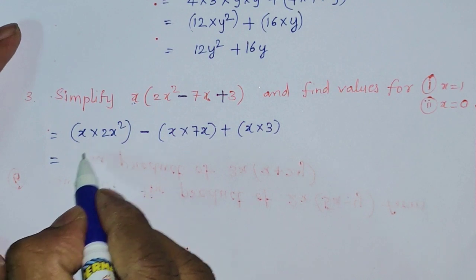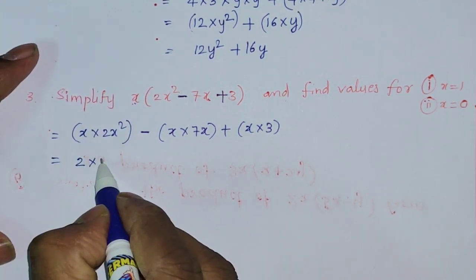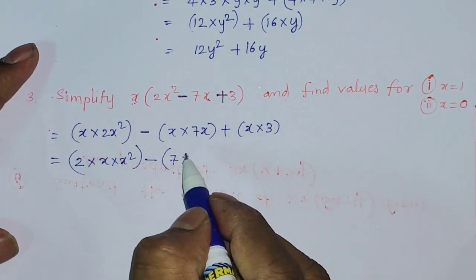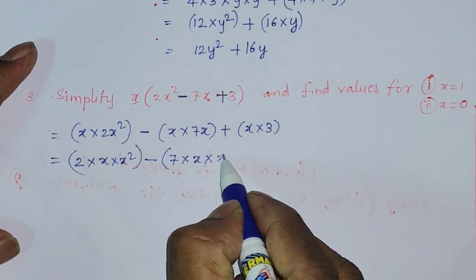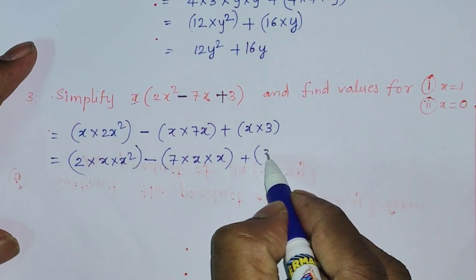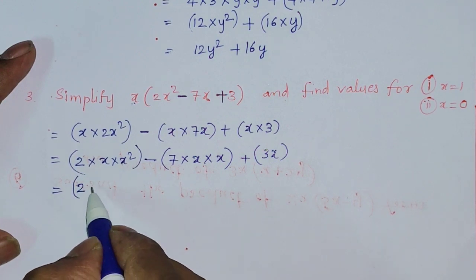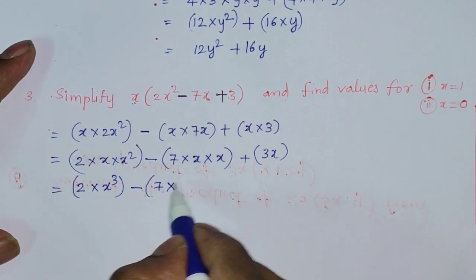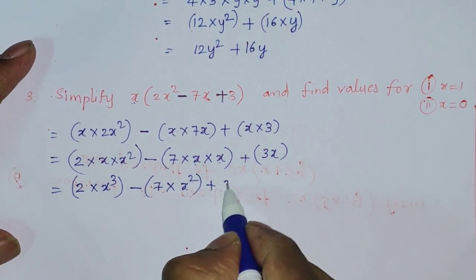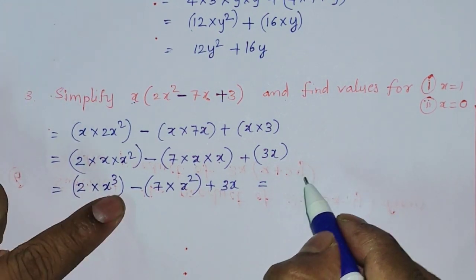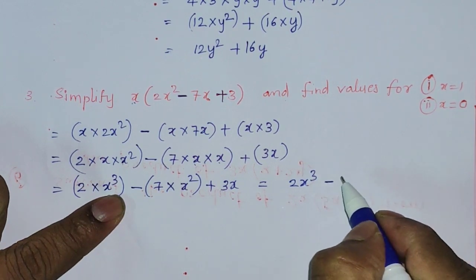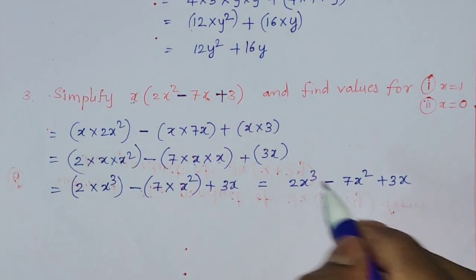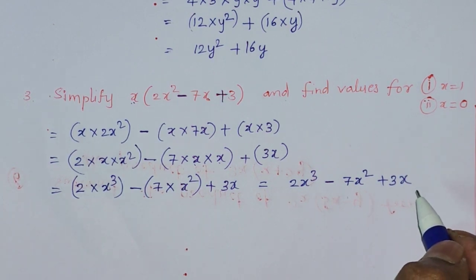We have one constant so write 2, and x into x squared becomes x cubed, giving 2x cubed. Applying commutative property: minus 7 into x into x gives x squared, so minus 7x squared. Plus x into 3 becomes 3x. So the simplified expression is 2x cubed minus 7x squared plus 3x.